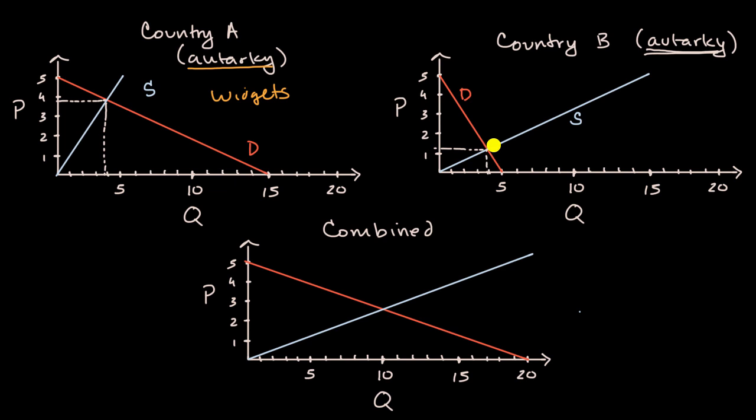Now let's imagine what would happen if they opened up their economies to each other. You would essentially horizontally add these two demand curves, and you would horizontally add these two supply curves to come up with a new supply curve and a new demand curve. Notice, at a price of five, in total, no one's demanding any quantity of these widgets.